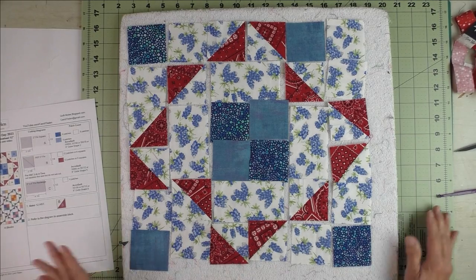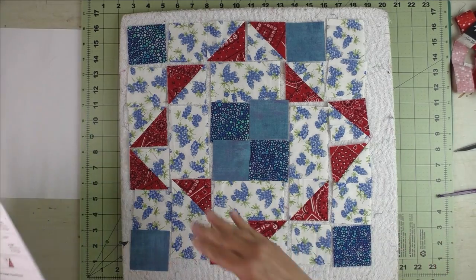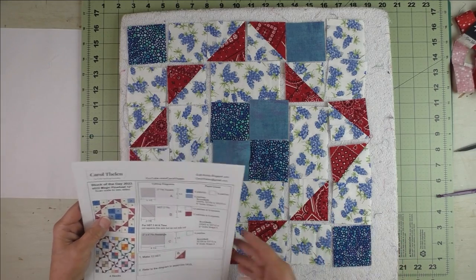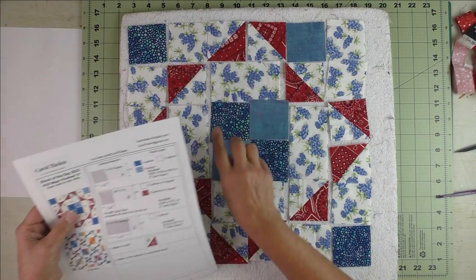After you're done laying them out, you'll want to check and make sure everything is facing in the right direction, meaning the half square triangles. So we'll just check those now.